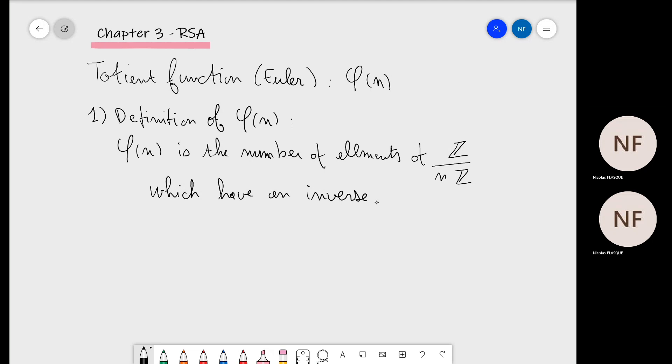As we've already seen before, not all elements of Z over nZ have an inverse. If you remember, some element a bar in Z over nZ has an inverse if and only if...